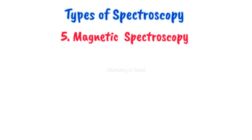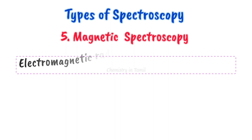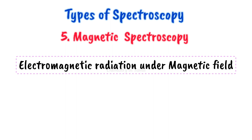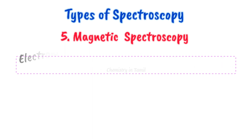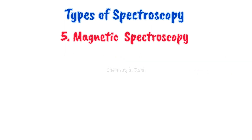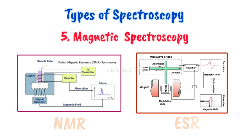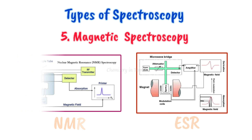Fifth one: magnetic spectroscopy. In magnetic spectroscopy, electromagnetic radiation is studied under a magnetic field. We will learn how the components change. Examples of magnetic spectroscopy include NMR spectroscopy and ESR spectroscopy.